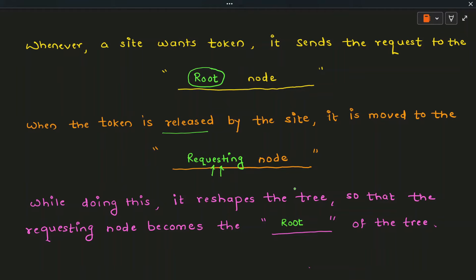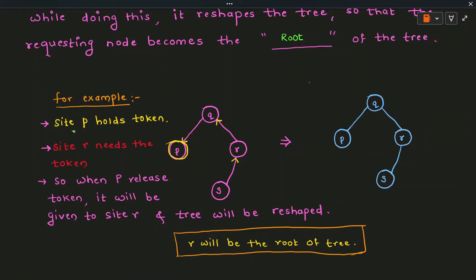Consider an example where site P is currently holding the token. All directed arrows point towards P, making P the root node. Now site R needs the token, so it requests the root node to release it. When P completes its execution in the critical section, it releases the token, which is then shifted from P to Q and then to R. Once the token reaches R, all arrows now point towards R, and R becomes the new root node.